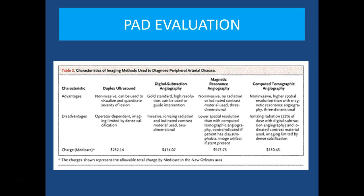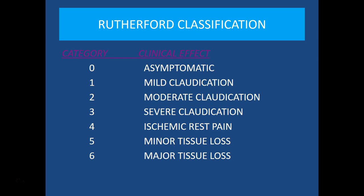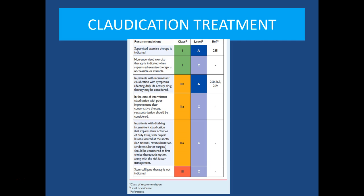Ultrasound is a relatively inexpensive means to perform good screening; DSAs and MRAs are also available. When communicating with vascular or cardiology colleagues, I utilize the Rutherford classification system: 0 is asymptomatic, 1 is mild claudication, 2 is moderate claudication, 3 is severe claudication, 4 is ischemic rest pain, 5 is moderate tissue loss, and 6 is major tissue loss. There are some therapies that are based on Rutherford classification.